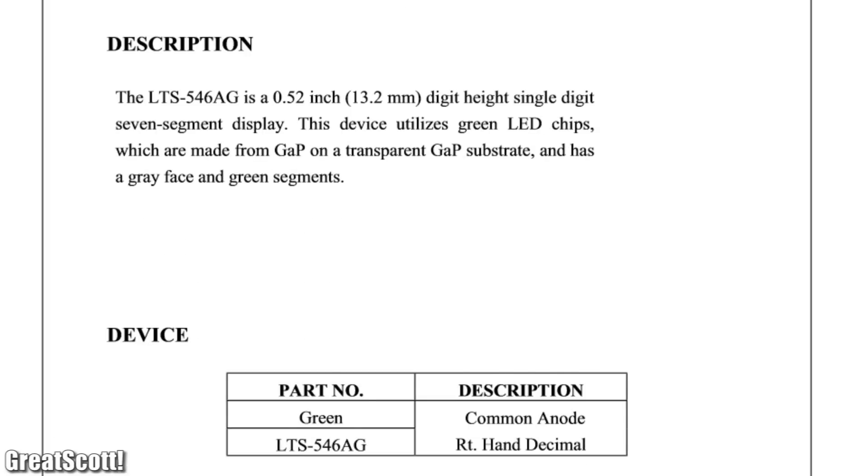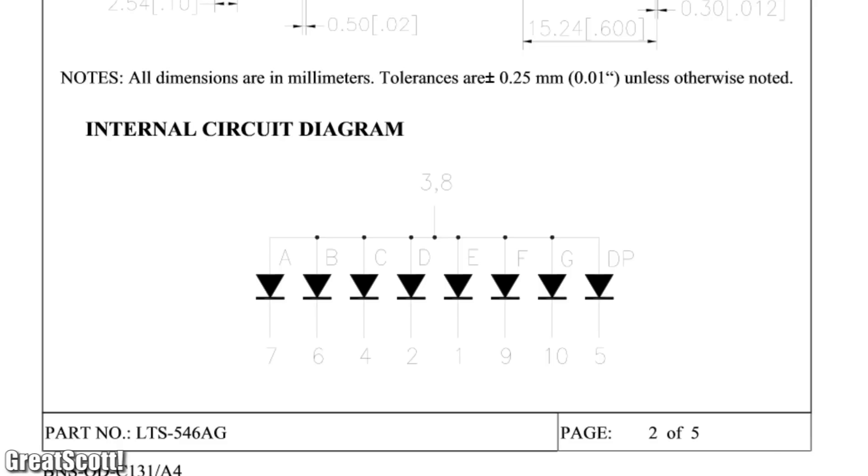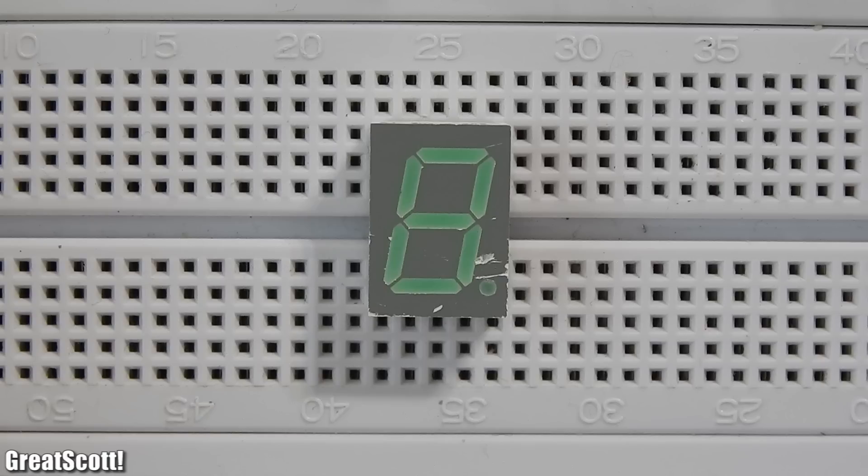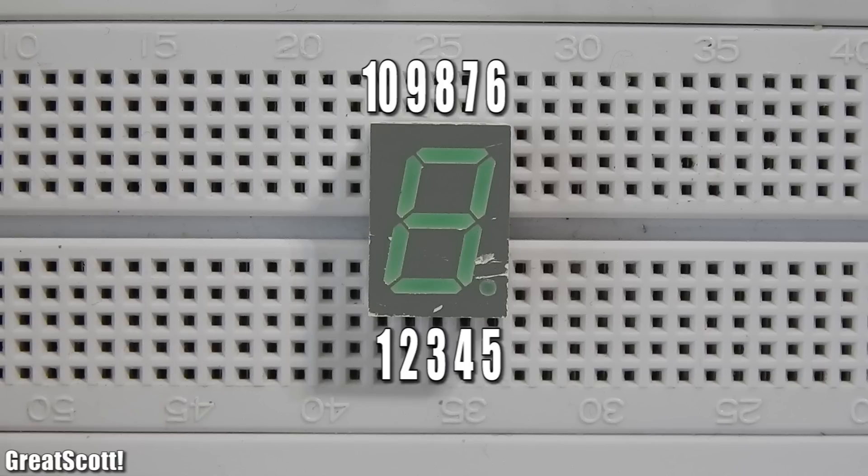What do we learn from the datasheet? First of all, we see that we are basically working with eight individual LEDs—seven for the bars and one for the decimal point. These LEDs are connected in a common anode configuration. So we have one common plus terminal for all LEDs which are the pins 3 or 8, doesn't matter which one I use, both do the same.